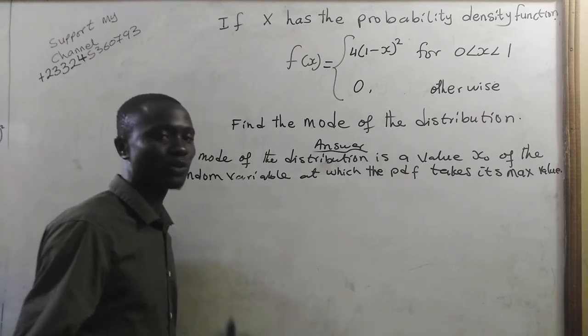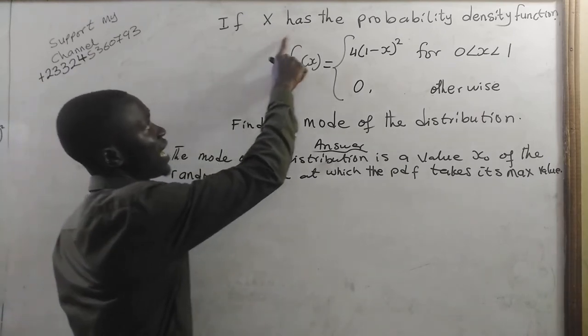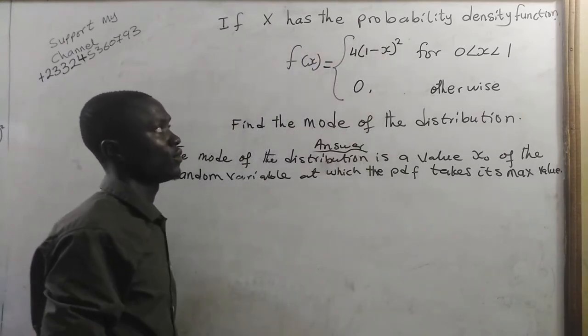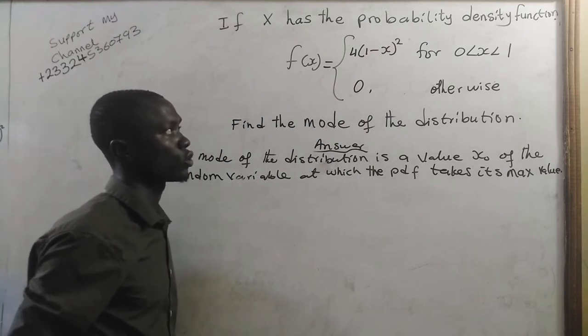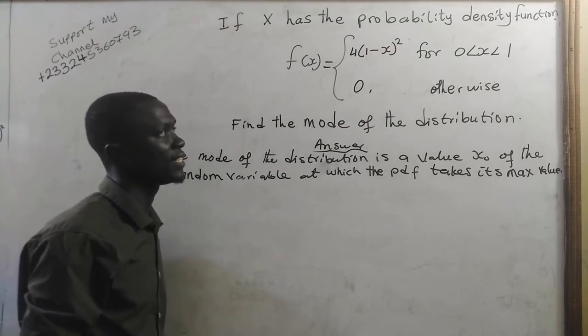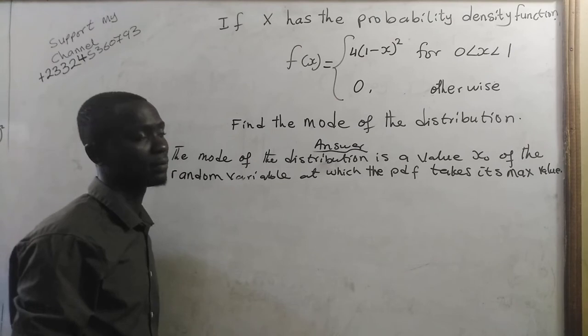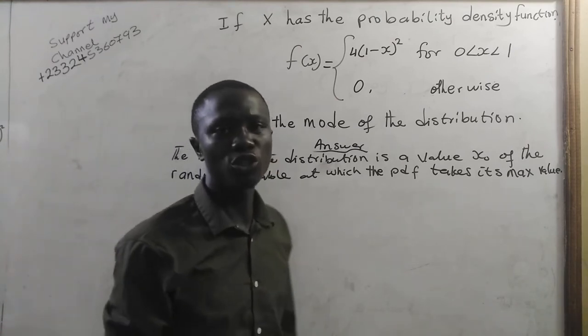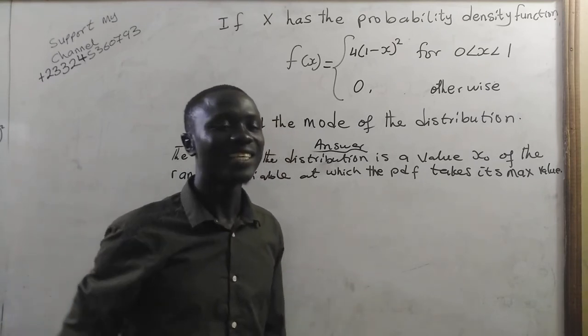Remember to subscribe to my channel. If X has the probability density function f(x) equals 4 times (1 minus x) squared for 0 less than x less than 1 and 0 otherwise, find the mode of the distribution.